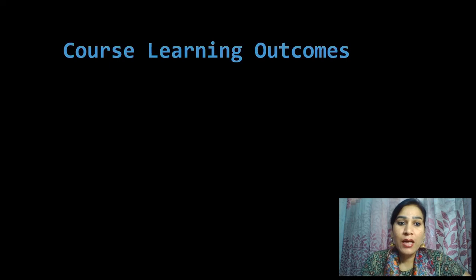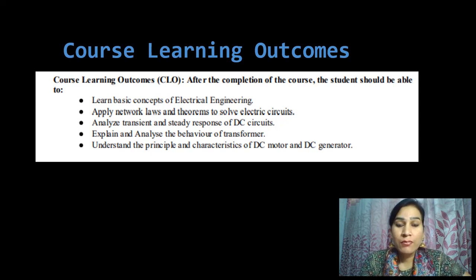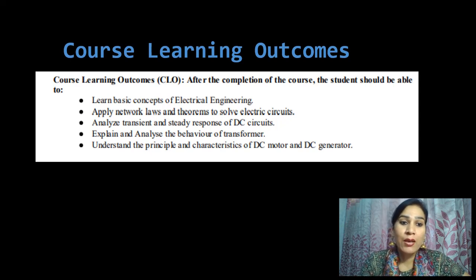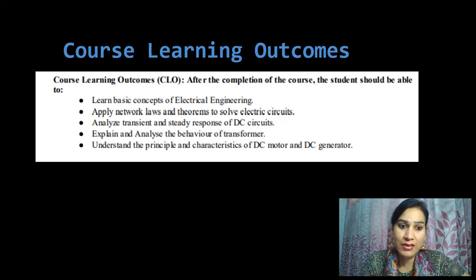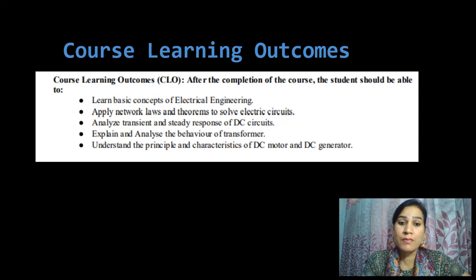Course learning outcome: what we learn after studying this course. After the completion of the course, the student should be able to learn basic concepts of electrical engineering, apply network laws and theorems to solve electric circuits, analyze transient and steady state response of DC circuits, explain and analyze the behavior of transformers, and understand the principle and characteristics of DC motors and DC generators.